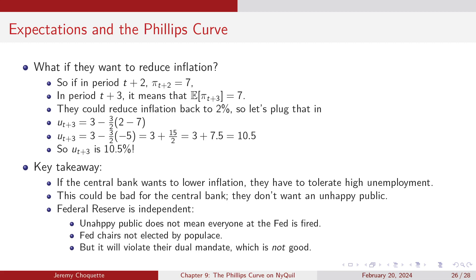You might choose to do it slowly — there are costs and benefits to doing it slowly versus ripping off the Band-Aid. It depends on what the central bank wants and how the public is expected to react. If the central bank wants to lower inflation, they have to tolerate high unemployment, which is very bad for the central bank because they don't want an unhappy public.